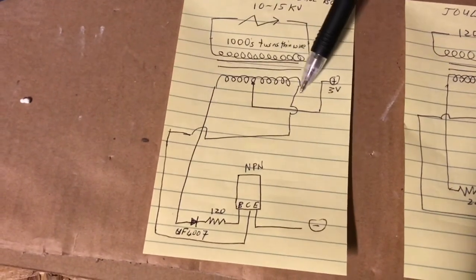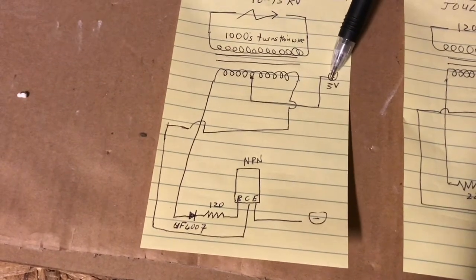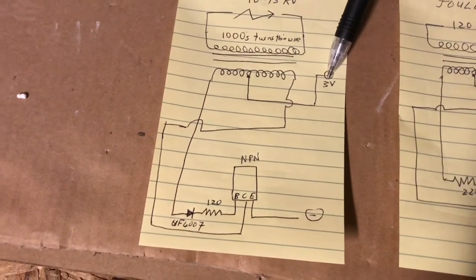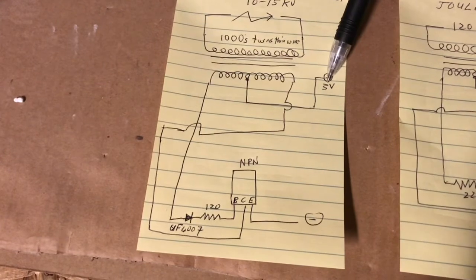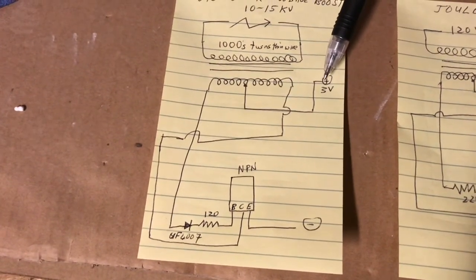And you essentially have this arrangement for the primary. And you're putting 3 volts across that which spontaneously starts oscillating according to the same way a jewel thief would work.